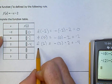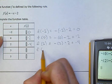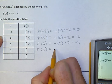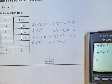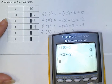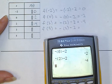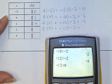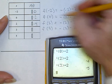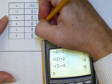Now let's do the next one, f of 3. Negative 3 minus 2. Negative, parenthesis, 3, parenthesis, minus 2 equals minus 5. That's our answer.